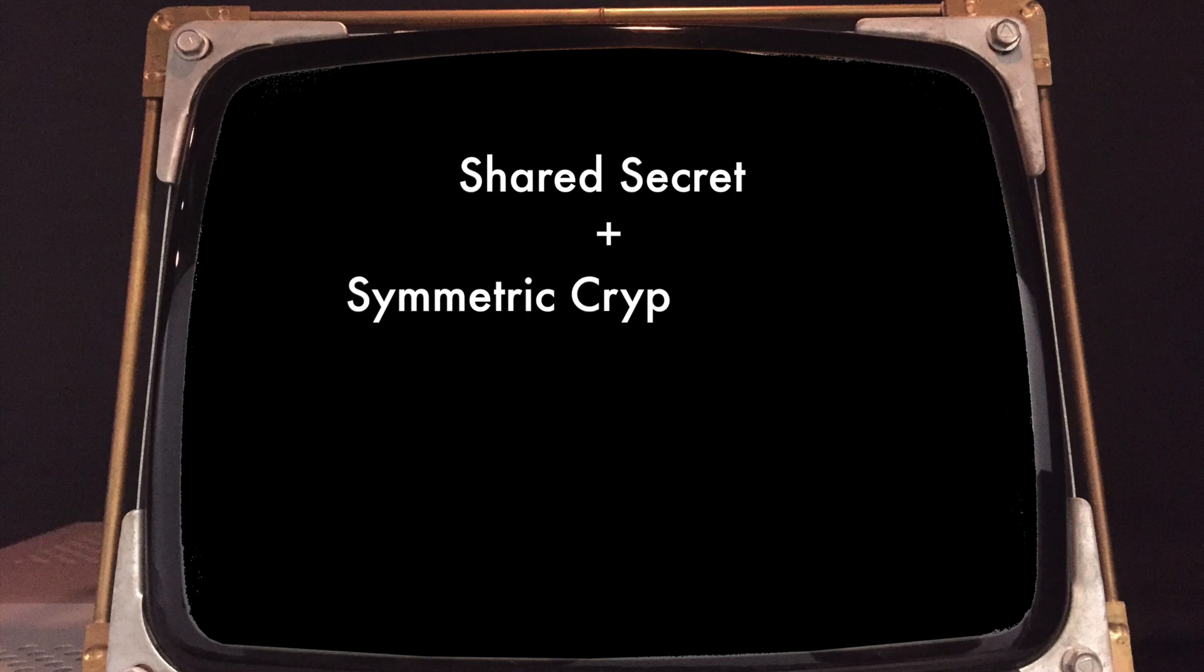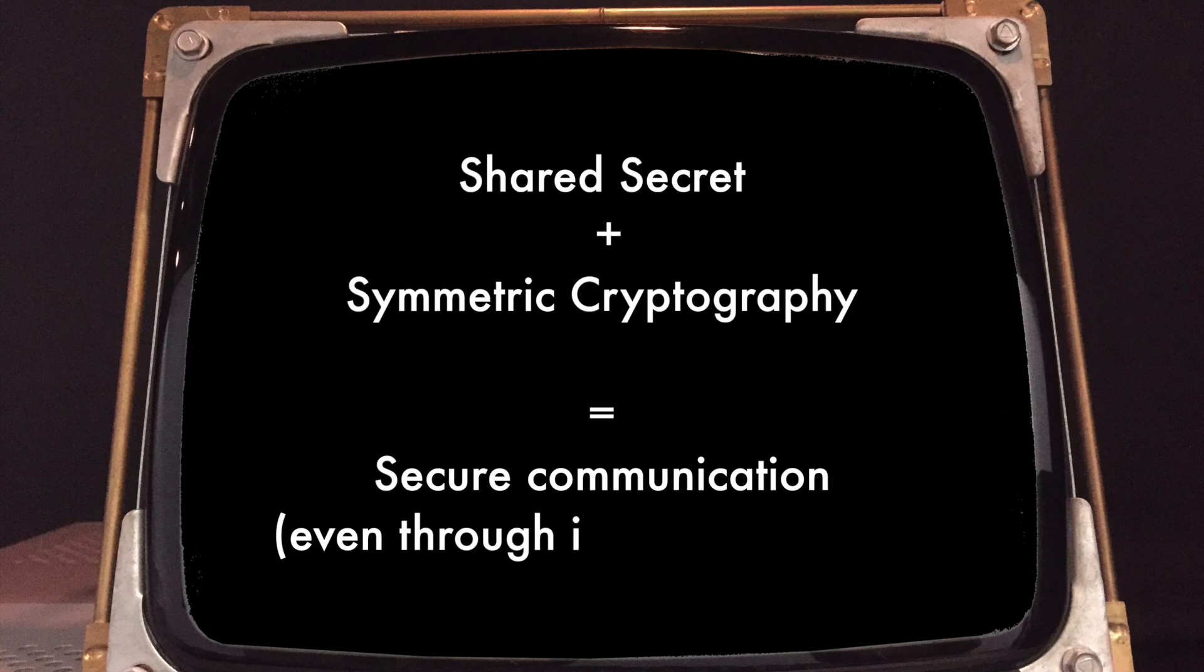If we have a shared secret, if Alice and Bob can share a secret, they can use some symmetric cryptographic algorithms to establish secure communications. So basically once a shared secret between Alice and Bob is established, they can now set up a secure communication channel using symmetric cryptography.